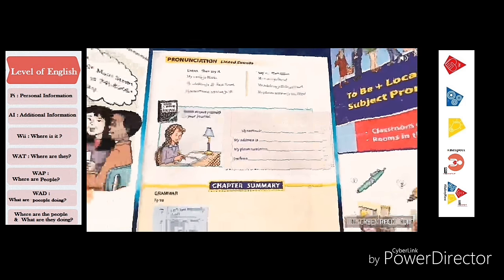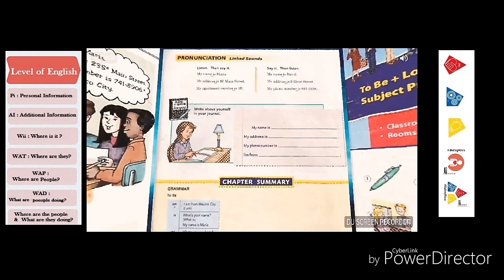On the first section up here, I'm going to ask you to listen and then you repeat it. Here we're going to listen to me repeat. Excuse me class, can you help me? Listen and repeat please. My name is Maria. My address is 10 Main Street. My apartment number is 3B. Perfect.